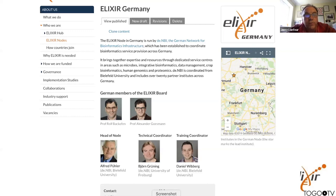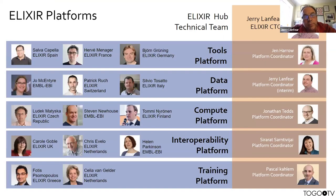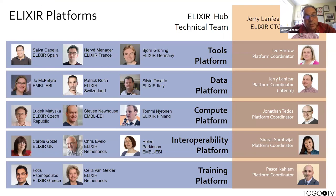So now we move on to the platforms. These are the organisational coordinators of our services. We have five platforms: tools, data, compute, interoperability, and training. For each platform we have what we call an ex-co — a senior member from one of our nodes who volunteers their time to lead the platform, typically for four to six years. For instance, within the tools platform we have Sava from ELIXIR Spain, Hervé from ELIXIR France, and Björn from ELIXIR Germany. We have three ex-co per platform across all platforms, and also a platform coordinator at the hub for each.